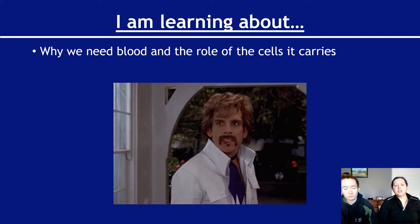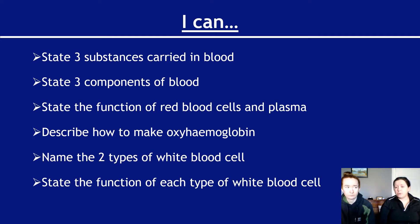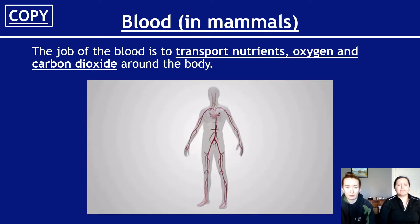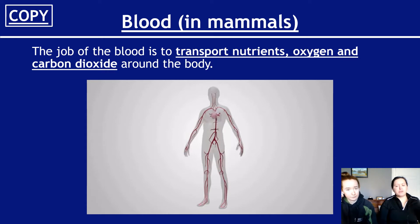So let's start off with blood. We need to know why you need blood and the roles of the cells it carries. You need to name the three substances carried in blood - that's different from the three components of blood. You need to state the function of red blood cells and plasma, describe how to make oxyhaemoglobin, and name the two types of white blood cell and state the function of each. The job that blood has in the body is to transport nutrients as well as oxygen and carbon dioxide around the body. Your blood is responsible for taking oxygen from your lungs to the rest of your body, and carrying the various different nutrients that we need to survive.